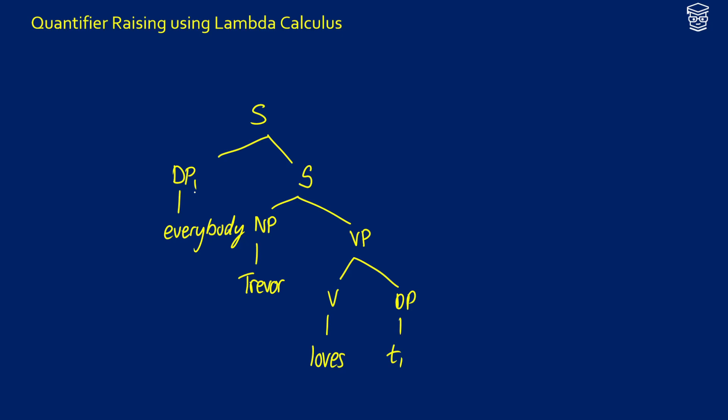We're going to do something a little bit different here because if we think about types, 'Trevor loves T1' is going to be type T, and then S is going to also be type T. If we think about everybody, it would force this to be a type TT and this is not what we want.